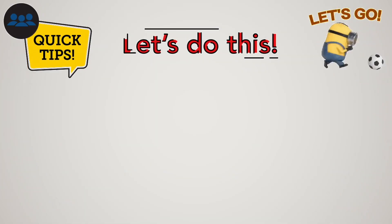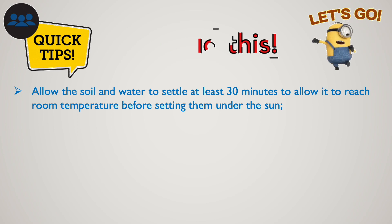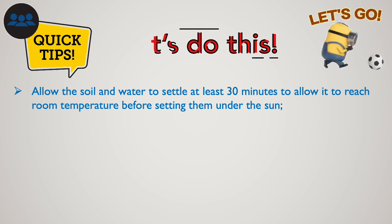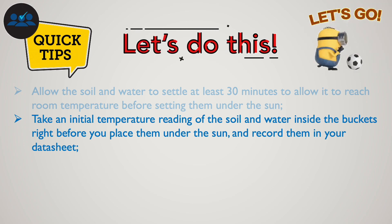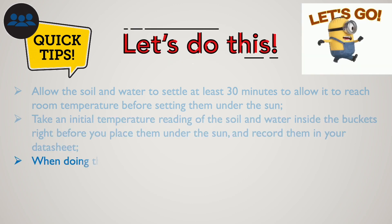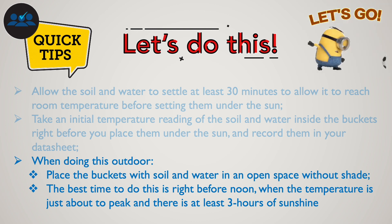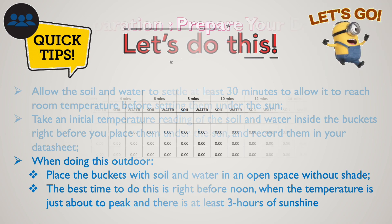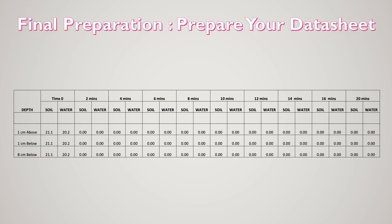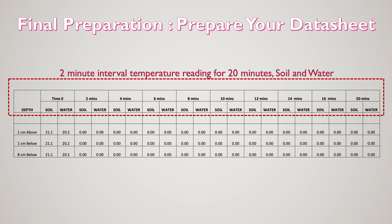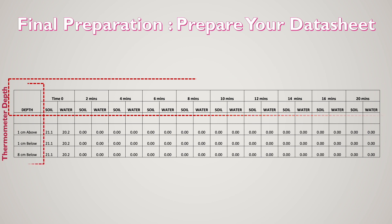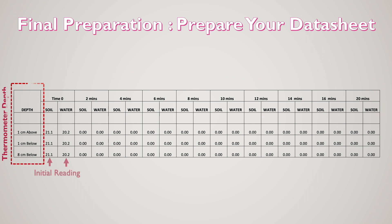Before setting your buckets under the sun, allow the soil and water to settle for at least 30 minutes to reach room temperature. Then take an initial reading and record it in your data sheet. When doing this outdoors, place the buckets in an open space without shade. The best time is right before noon when temperature is just about to peak and there are at least three hours of sunshine. Prepare your data sheet with soil and water temperature readings at two-minute intervals for 20 minutes. On the first column, indicate the thermometer depth, and don't forget to record your initial reading. We are using degrees Celsius as our unit of measurement.